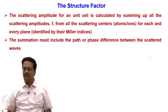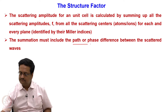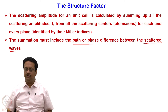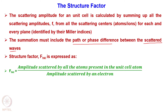What we are trying to do is: the scattering amplitude of a unit cell is calculated by summing up all the scattering amplitudes - that is the f from all the scattering centers, which are atoms or ions - for each and every plane that one can consider in the crystal. The summation must include the path or phase difference between the scattered waves. The structure factor, represented by the upper case letter F with suffix hkl, is mathematically expressed as the ratio of amplitude scattered by all the atoms in the unit cell divided by the amplitude scattered by an electron.